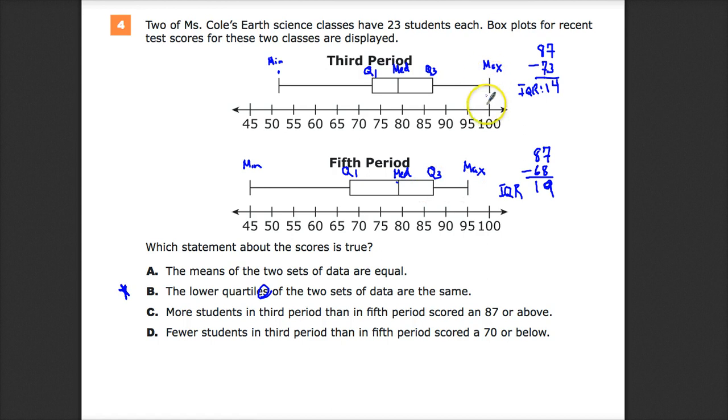Now, they have a higher overall score. But I can't say necessarily that there are more students in third period than fifth that scored an 87. One kid may be up here, and then everybody else is down in this area. But if we've broken it up into quarters, it's very likely that the same number of people is above this. That's how we deal with quartiles.